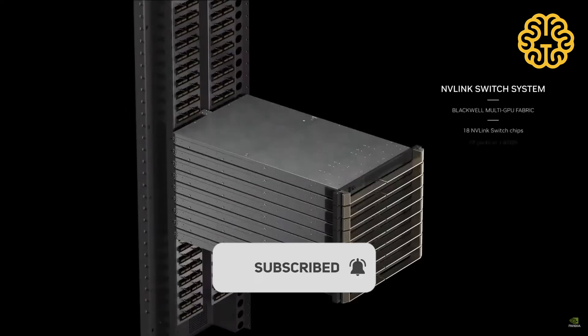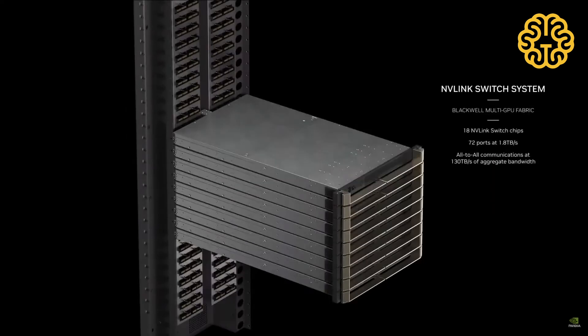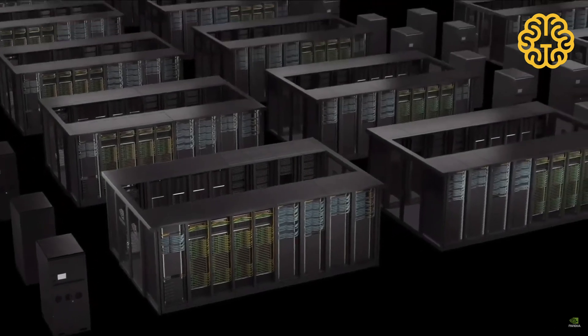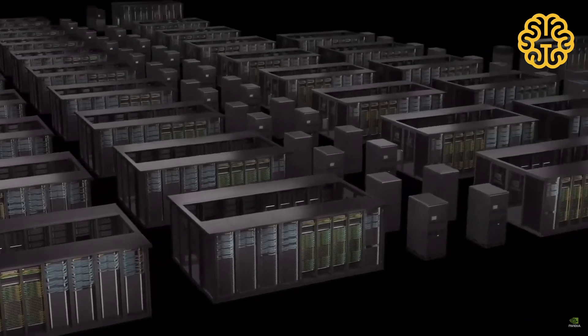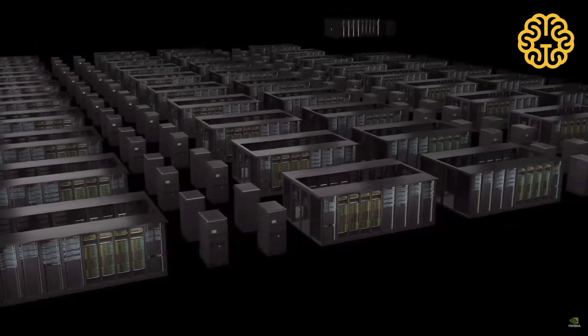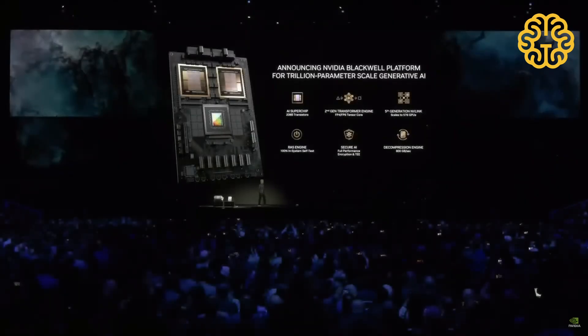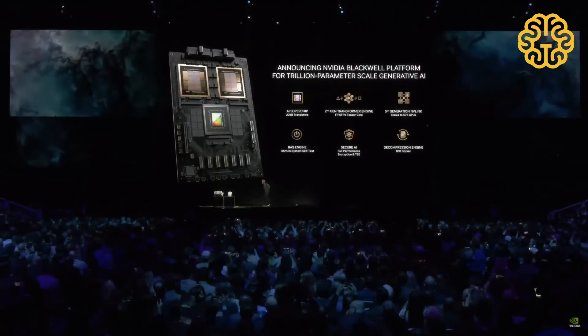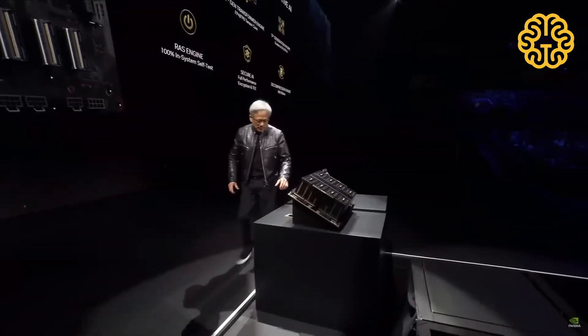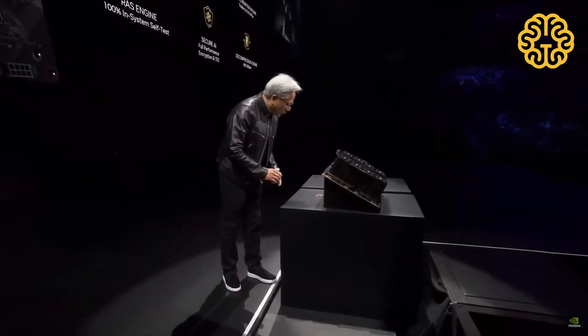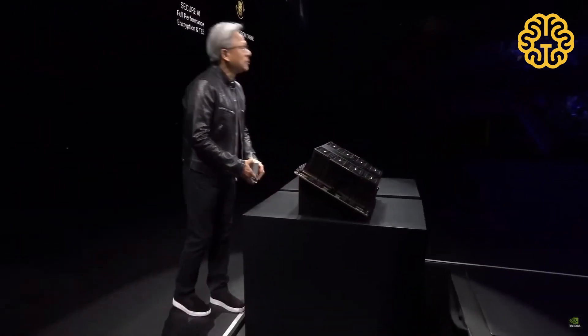Now, on a normal day, training a 1.8 trillion parameter model would have previously taken 8,000 Hopper GPUs and 15 megawatts of power, says their CEO. But today, 2,000 of NVIDIA's Blackwell GPUs can do this while consuming just 4 megawatts of power. On a GPT-3 LLM benchmark with 175 billion parameters, NVIDIA says the GB200 has a somewhat more modest performance compared to an H100, and NVIDIA says it offers 4 times the training speed.